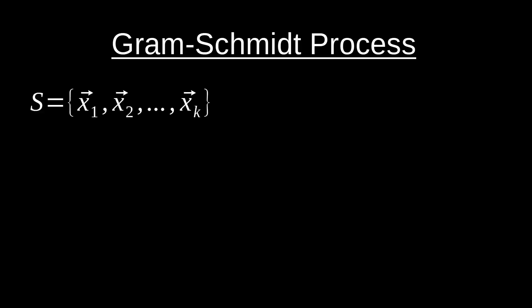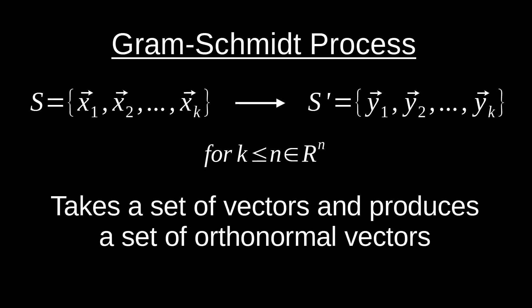So the Gram-Schmidt process — what is it? It's a process by which we can take some set of vectors and produce a set of orthonormal vectors. The limitation is that we can only use this process on a set of vectors with a total number less than or equal to the space we're working in. So if we're working in three-space, we could use this on a set of two or three vectors, but not a set of four vectors.